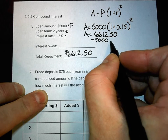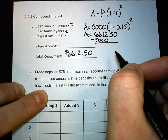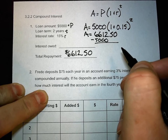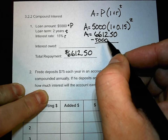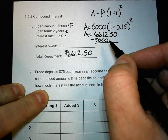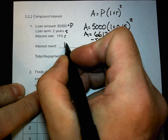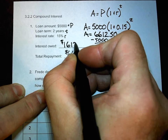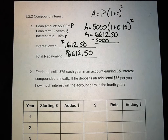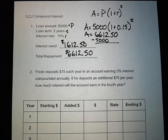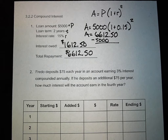The interest equals one thousand six hundred twelve dollars and fifty cents. If you're the person who gave this loan, you did really well — you added one third to your money in two years. That's a good deal for the lender.